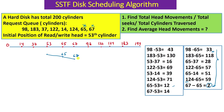Now the current position is 67. We find the difference between 67 and all remaining cylinders. Subtracting 67 and 37 gives 30, which is the minimum - all other differences are larger. So we move from 67 to 37 and that service is completed.